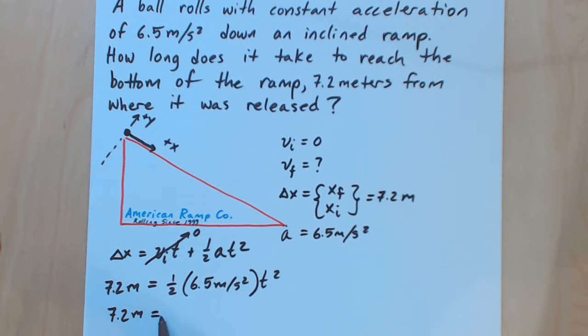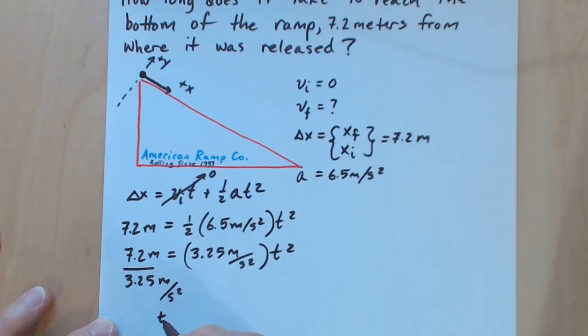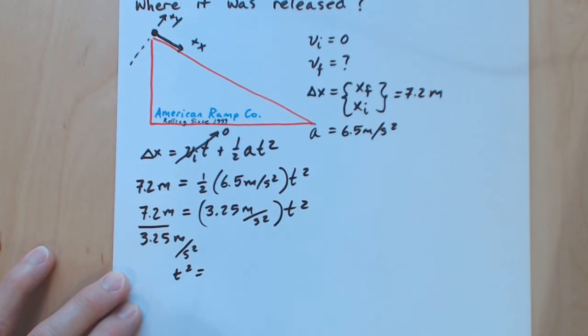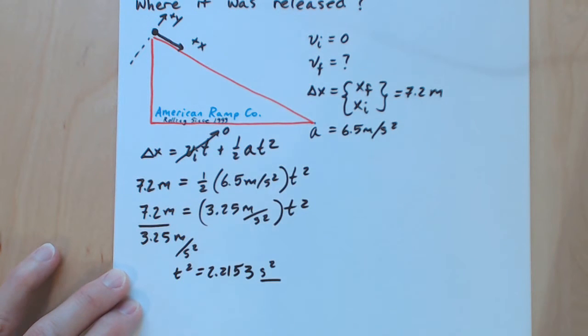I'll go ahead and multiply this out. 7.2 meters is equal to half of 6.5, which is 3.25 meters per second squared times time squared. So if I divide both sides by 3.25 meters per second squared, I'm going to end up with time squared being equal to 2.2153 seconds squared. It's important to note just to use seconds squared as a check because when I take the square root of the time value, I'm going to take the square root of seconds squared and all will be well. And so that works out to be 1.488, I'll call that 1.5 seconds.